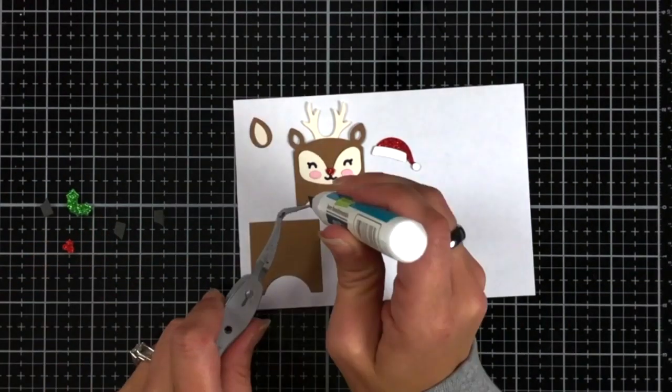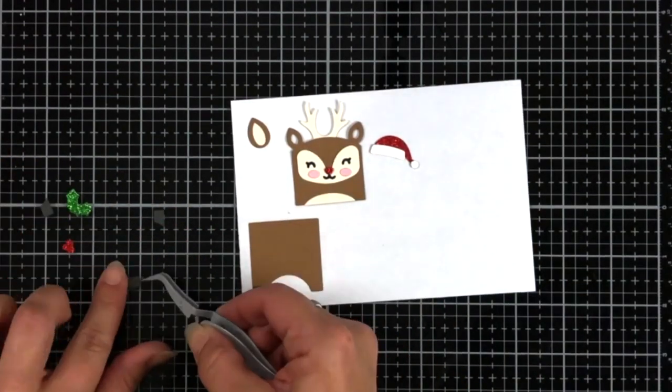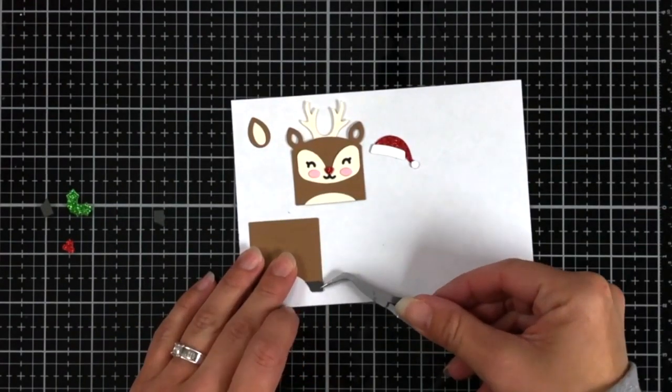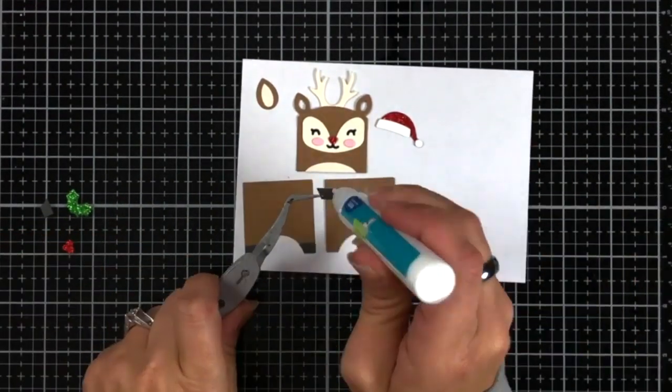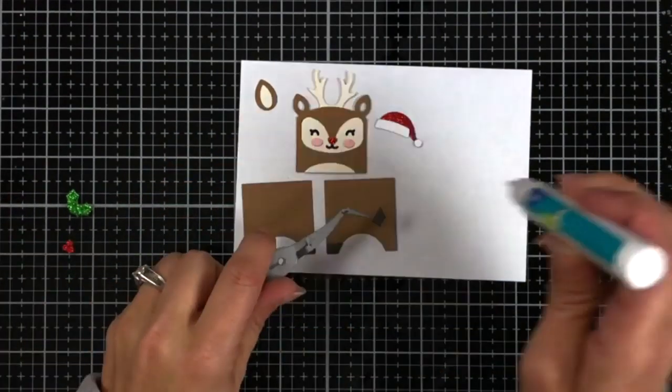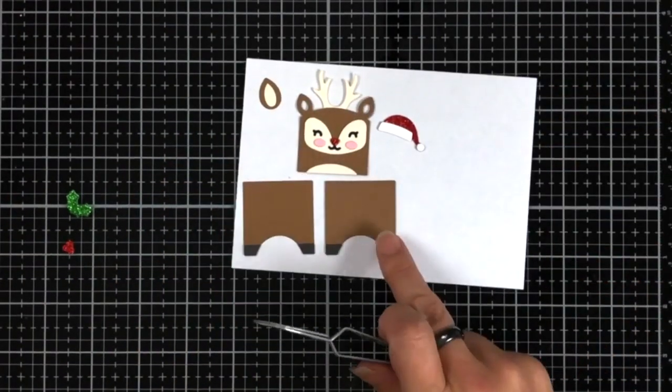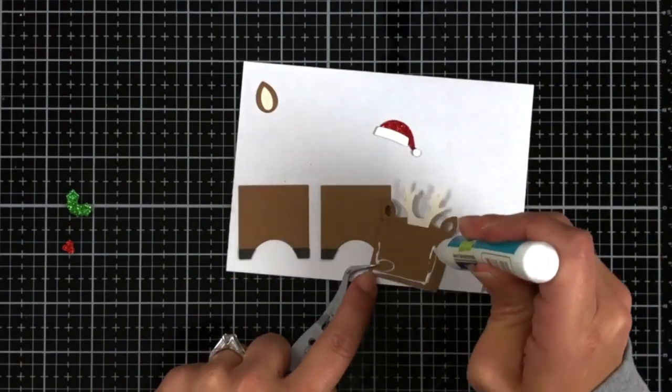Now in the deer add-on for the tiny gift box you have the option of just leaving it as that square or you can die cut out these pieces like I have here to add the hooves which I thought were super cute so I did use those on my ornament.